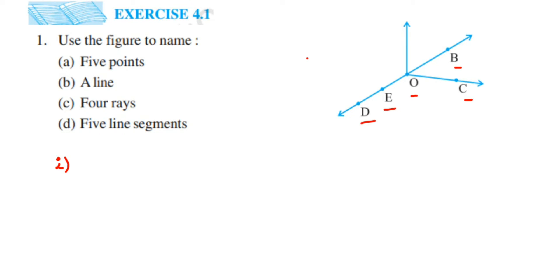You can see a dotted sign is given and they are represented with a capital letter. So D, E, O, C and B — all these are examples of the five points. So the answer will be D, E, O, C and B.